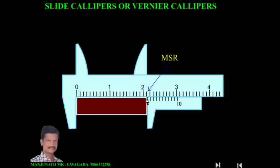The length of this object is a little more than 2.1 cm. This extra little amount can be measured by using the coinciding value. The third division on the vernier scale is coinciding with one of the divisions on the main scale. So this is the coinciding vernier scale division, or CVD.